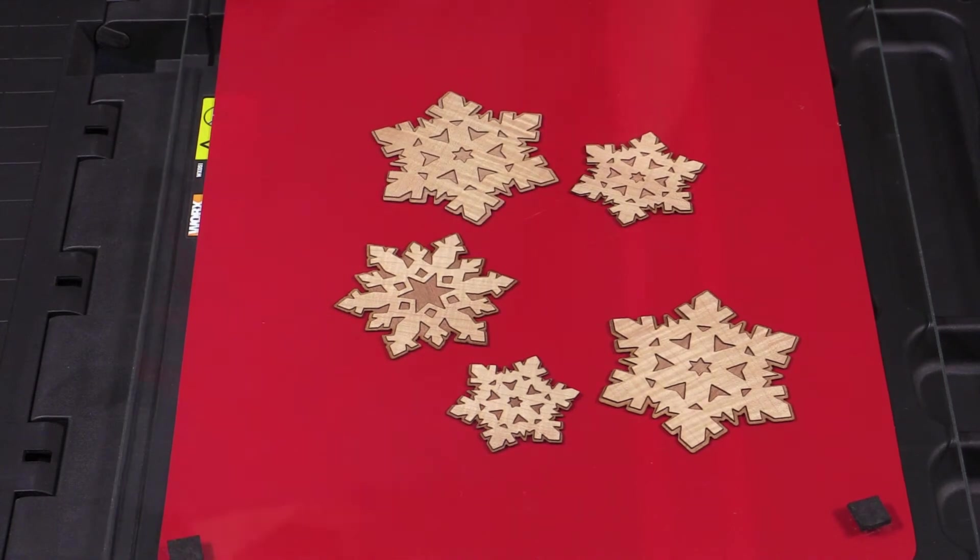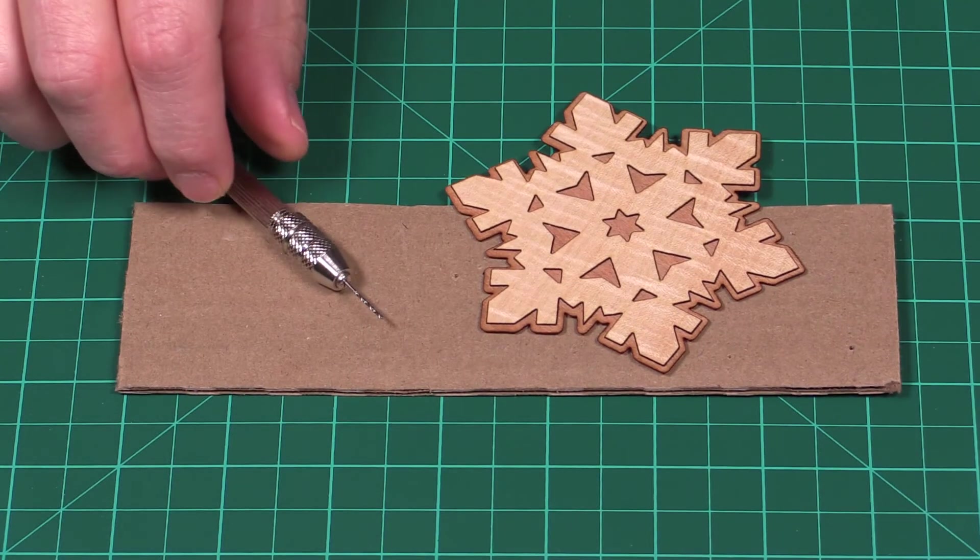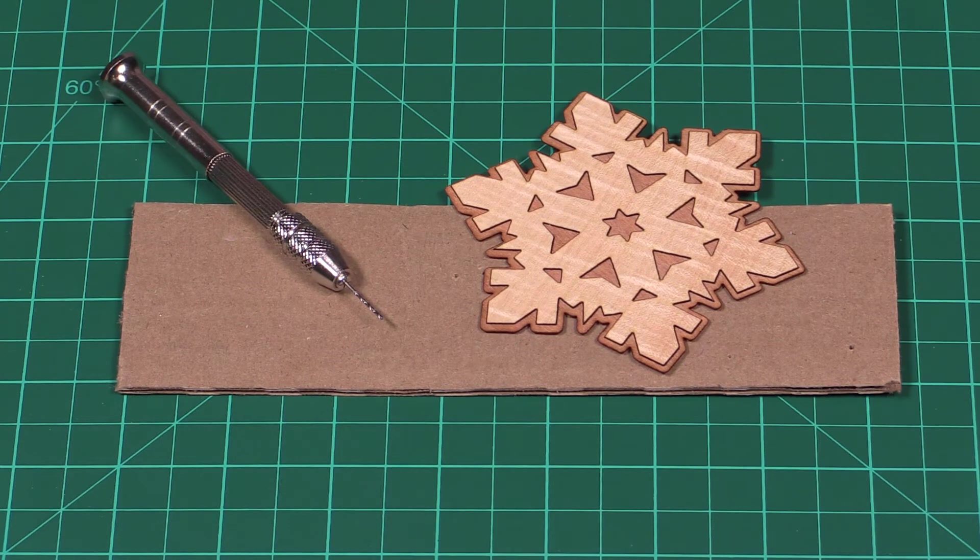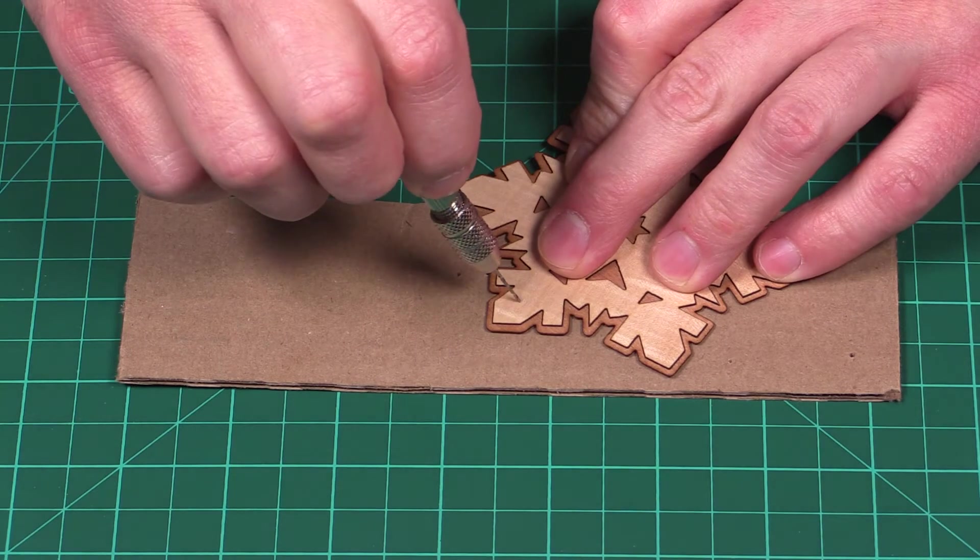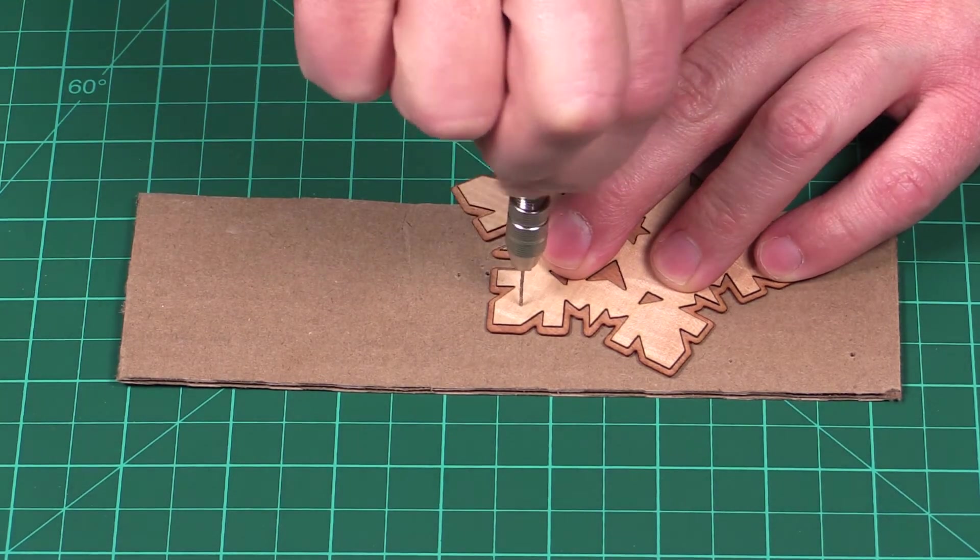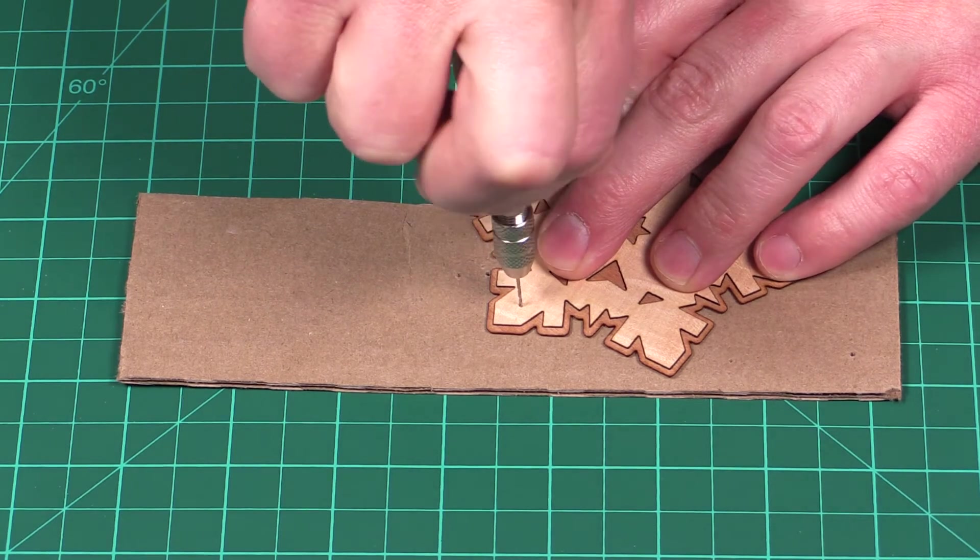Once your ornament is glued and dried, it's now time to drill the hole that'll attach the hook to the string for the ornament. It's best to use a really small pilot hole on these, then drill it to the size you'd like the hole to be, to make sure none of the veneer actually separates or breaks.